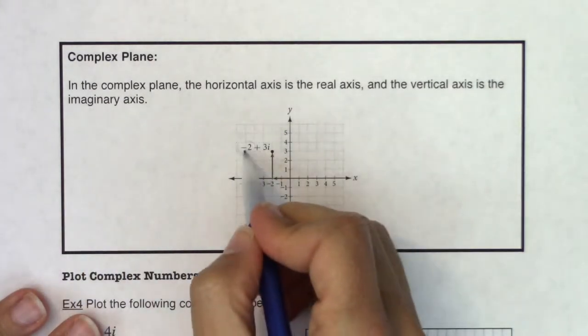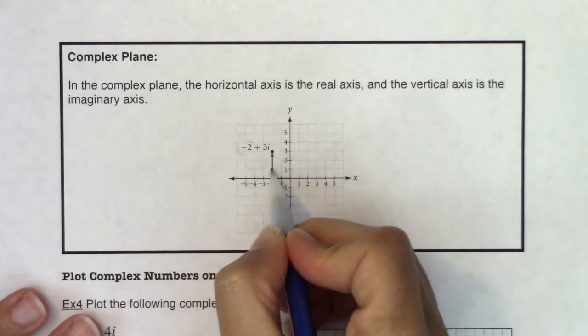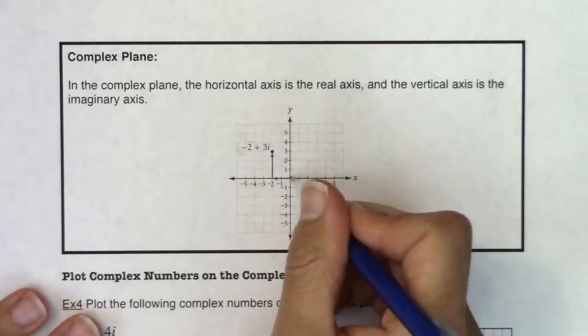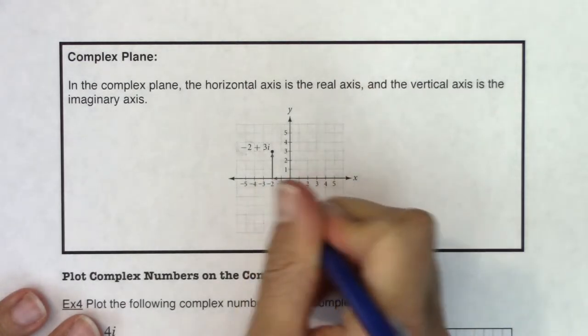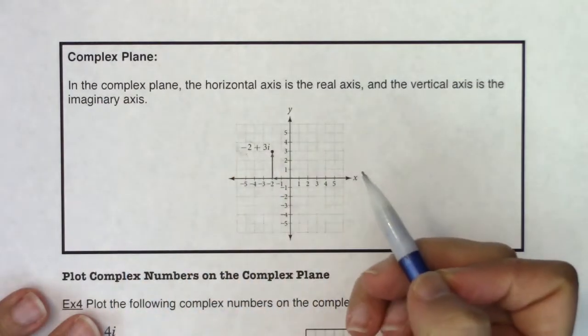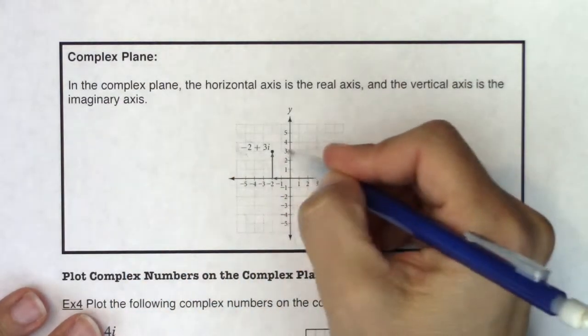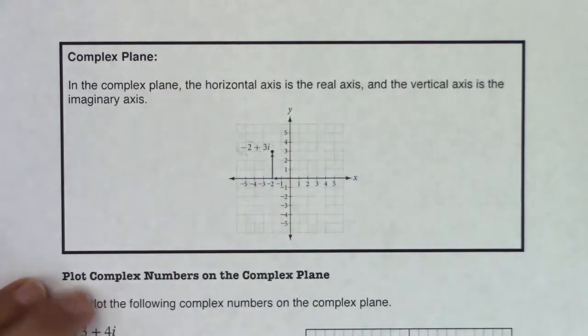So when I say negative 2, you're going to go left 2 and when I say 3i, you're going to go up 3 because that's what the complex plane will have you do real and then imaginary. So you're going to move initially left or right depending on the real part of your complex number and then up or down depending on the imaginary part for your complex number.